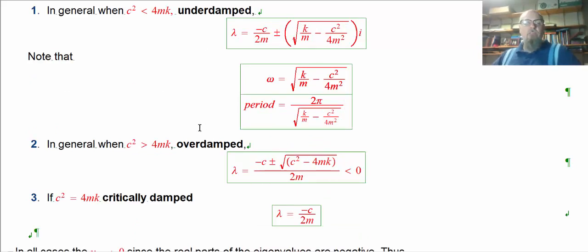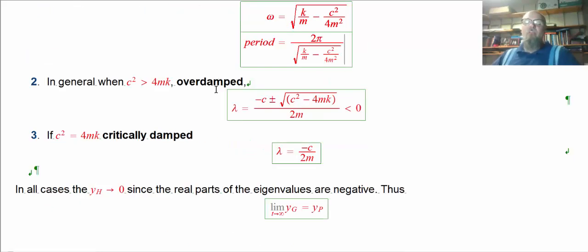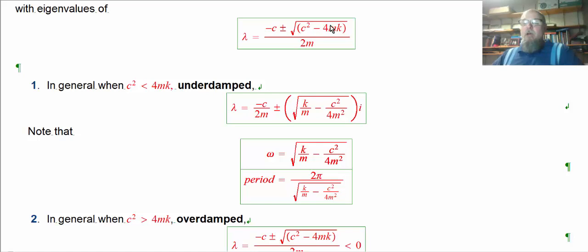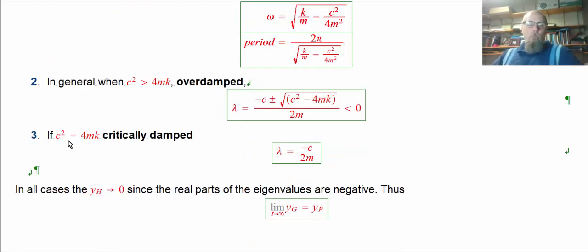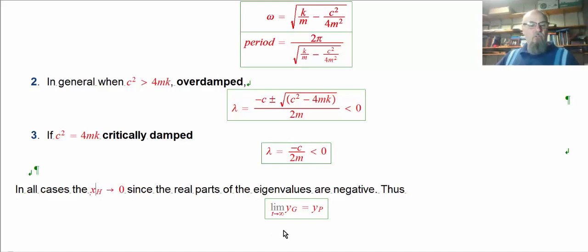To summarize: if the discriminant is negative, we have complex conjugate roots and underdamped oscillation; if positive, real and different roots and overdamped behavior. If the discriminant is exactly zero, that's critically damped — two real and equal eigenvalues, both negative. In all three cases, the homogeneous solution goes to zero since the real parts of the eigenvalues are always negative, so the general solution always approaches the particular solution.